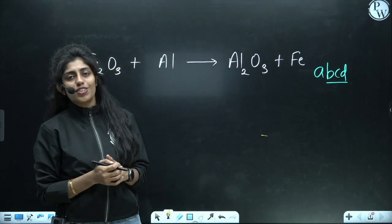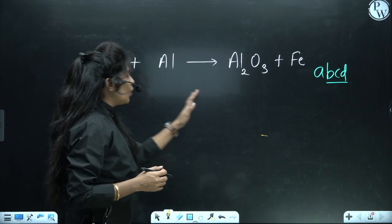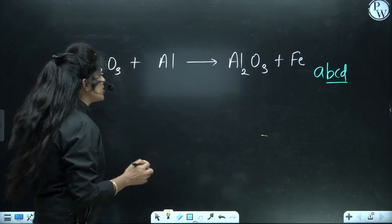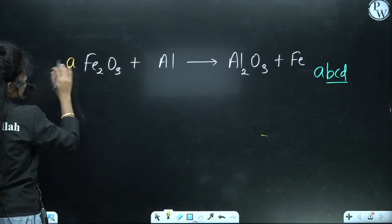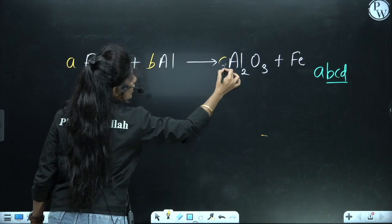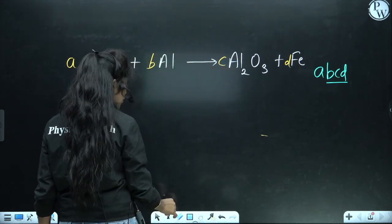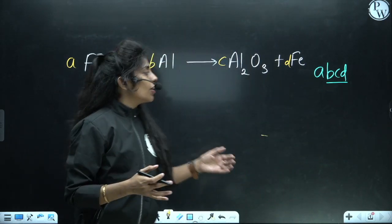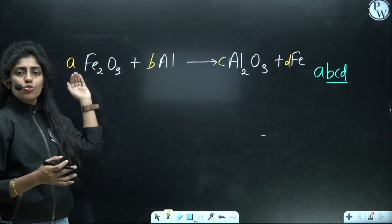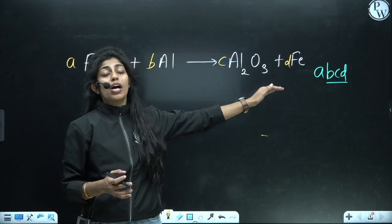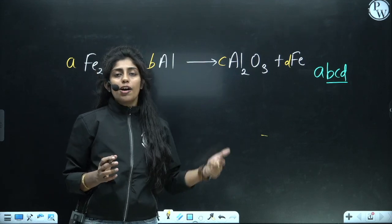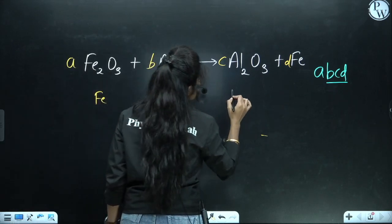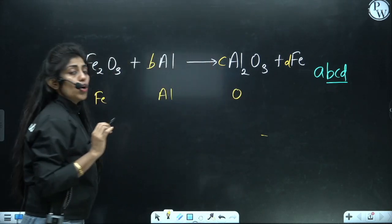Now what is this ABCD method? I am not using the hit-and-trial method. Using ABCD, I will be using coefficients a, b, c, and d. So in order to follow the law of conservation of mass, what is going to happen? The amount of Fe I am using here should be equal to the amount of Fe I am getting on the product side. So the coefficient of Fe, for Al, and for oxygen should be the same. So here I can see 'a' in front of Fe, so I can write 2a.